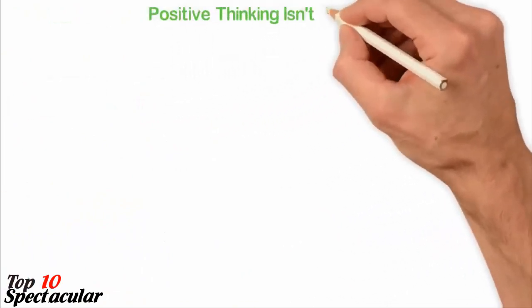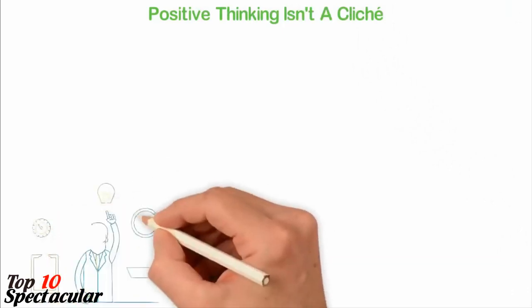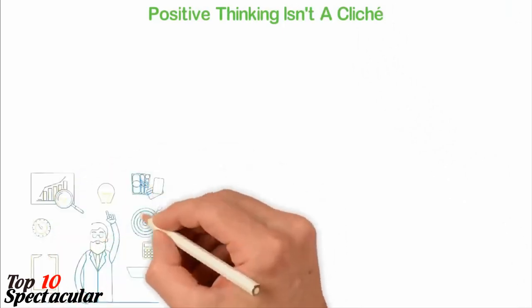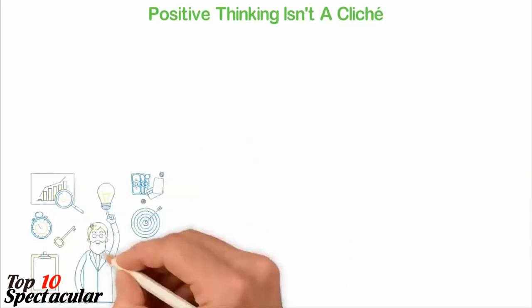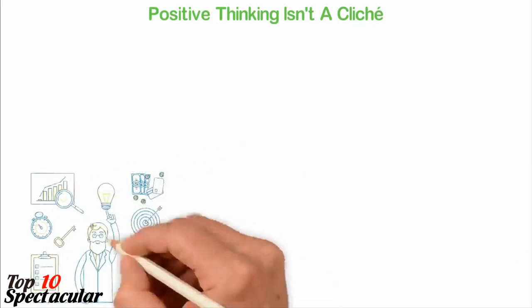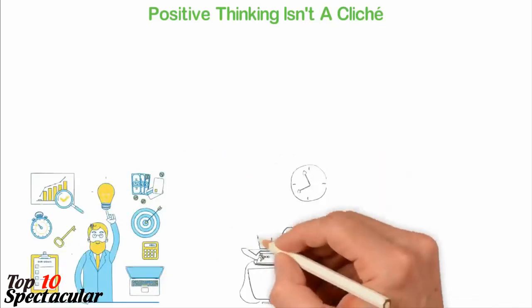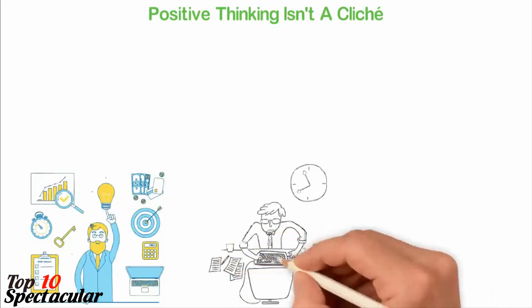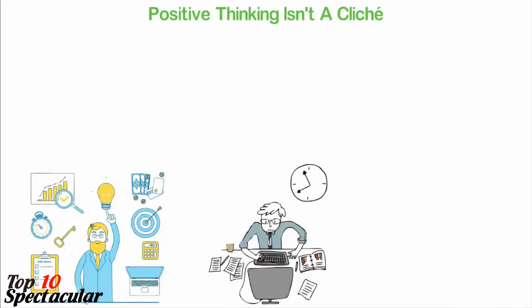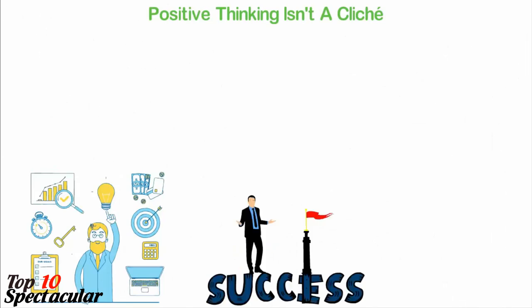Positive thinking isn't a cliché. Most people think that there's a magic that happens when you're optimistic about life. No. Let me show you how it happens. People who are optimistic believe they can change their lives and because they have this belief, they try more things than others and because they try more things, they make more mistakes and since mistakes make you smarter, they become smarter and then when you become smarter, you become more successful. It's that simple.